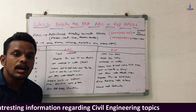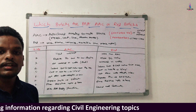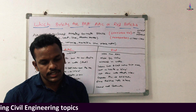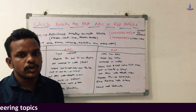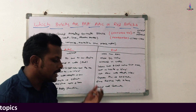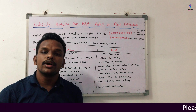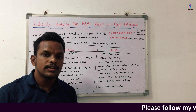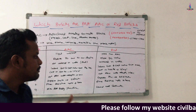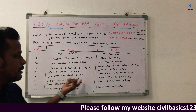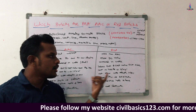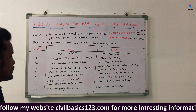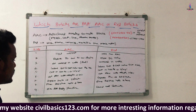The sixth comparison is water absorption. AAC blocks do not allow water absorption of more than 10%, while red brick blocks do not allow water absorption of more than 20%. So there is a 10% difference in water absorption capacity between AAC blocks and red brick blocks.